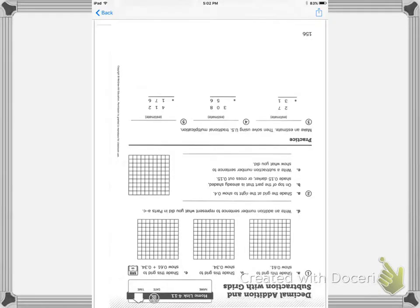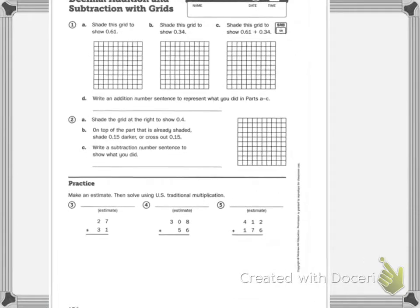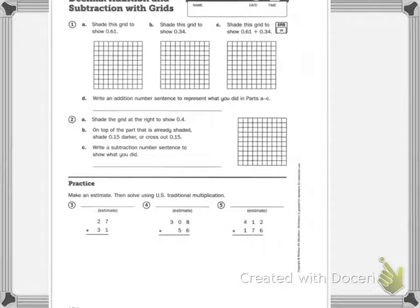Your homework today looks like this. Shade the grid to show 61 hundredths. So 10, 20, 30, 40, 50, 60, one.